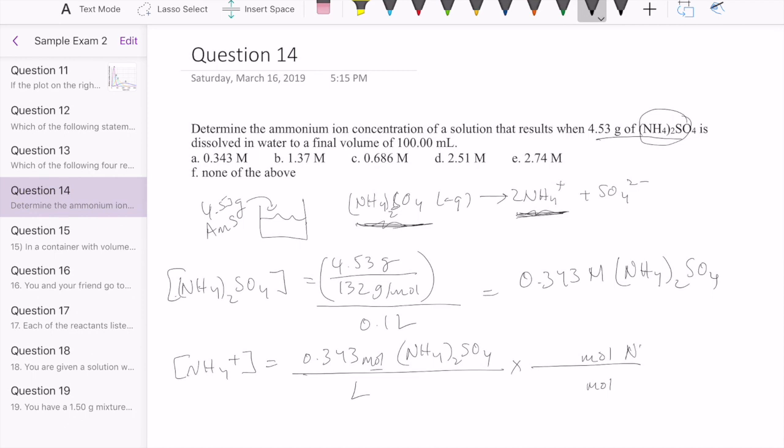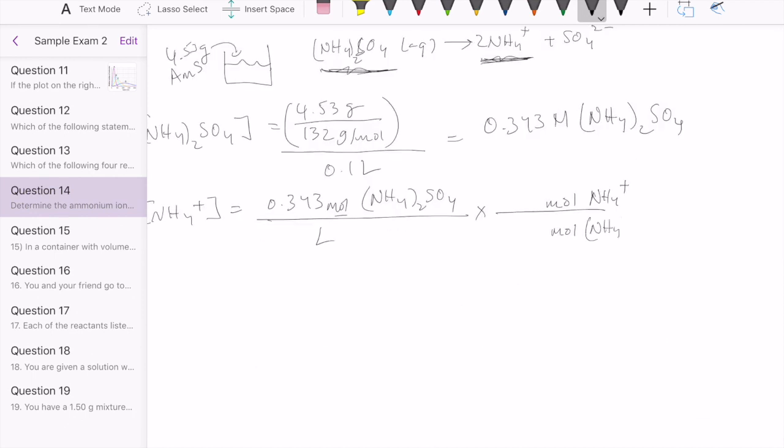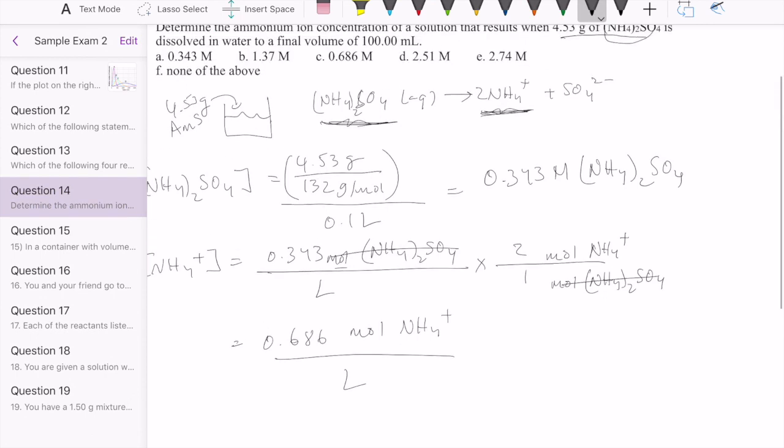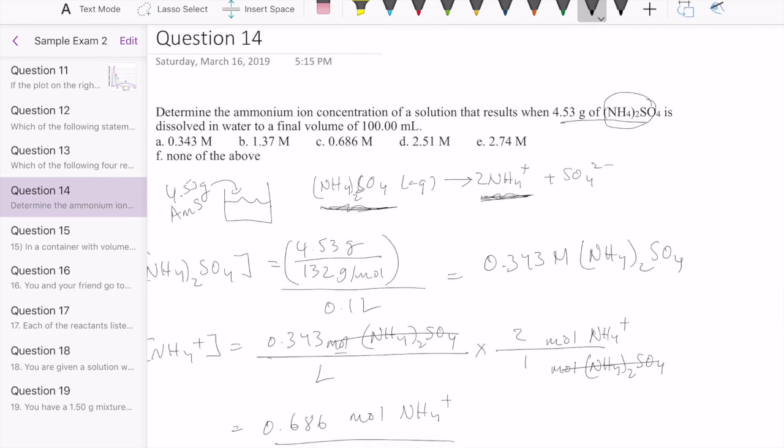So the moles of ammonium ion over the moles of the compound ammonium sulfate has a two to one relationship. So that cancels out that number of moles, giving us 0.686 moles of ammonium ion per liter, which is the same as molarity of ammonium ion. So that answer is C.